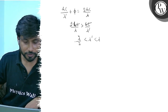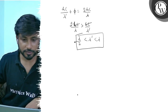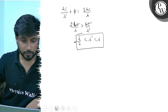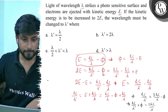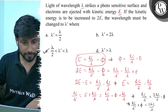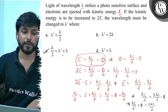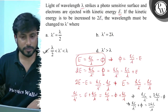So lambda dash is greater than lambda by 2, but lambda dash is less than lambda. The final answer is option C: lambda dash is greater than lambda by 2 but less than lambda.